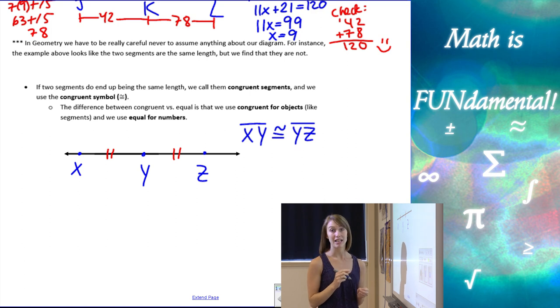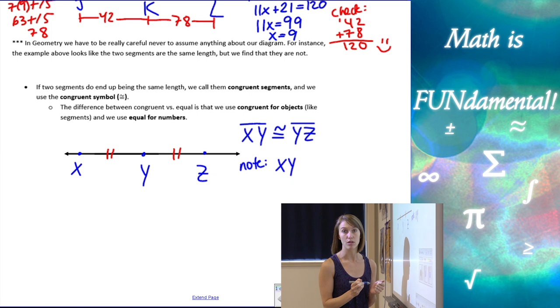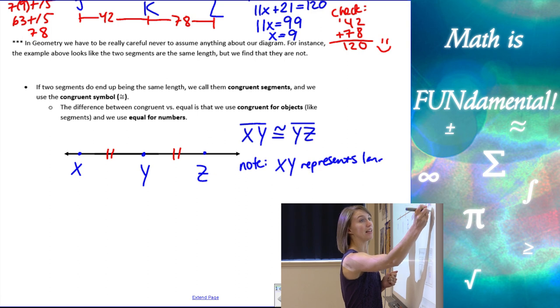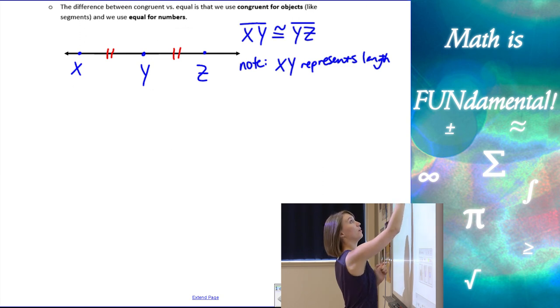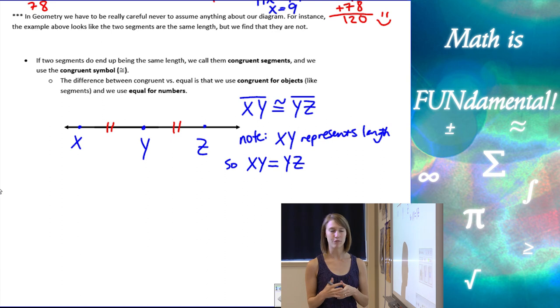There's our congruent symbol to YZ, segment YZ. Now, the difference between congruent and equals is that we use congruent when we're talking about objects like segments. We use equals when we're talking about numbers. So it's going to get a little confusing. We want to note that if I have just XY without the symbol, that represents length. And length is a number. So if I have XY and YZ without any symbols, I can say they're equal to each other because the way I've written that represents a length. I know that might be a little confusing now, but we'll practice that in class and it'll be a little easier for you later.